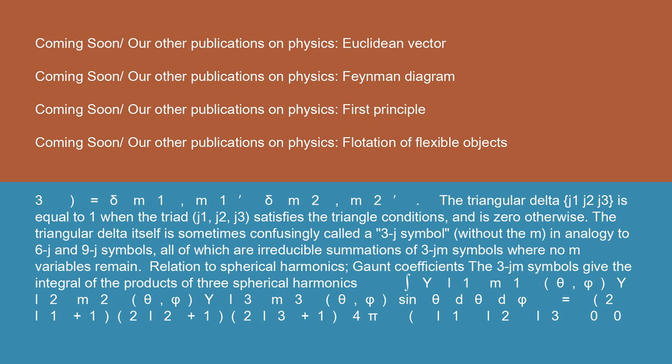The triangular delta Δ(j1 j2 j3) is equal to 1 when the triad j1 j2 j3 satisfies the triangle conditions and is 0 otherwise. The triangular delta itself is sometimes confusingly called a 3J symbol, without the m, in analogy to 6J and 9J symbols, all of which are irreducible summations of 3JM symbols where no M variables remain.